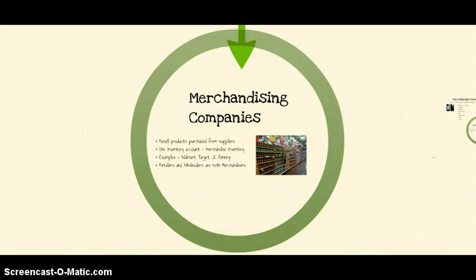There are two types of merchandising companies: retailers and wholesalers. They are both merchandisers. Retailers buy from suppliers or other wholesalers and sell to consumers. Wholesalers buy from suppliers and they only sell to retailers. Retailers and wholesalers are both two types of merchandising companies.